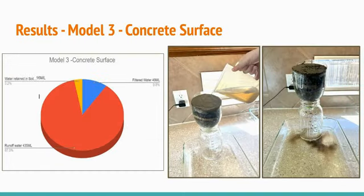This slide shows the results of model 3. You can see the filtering process in the pictures. The chart shows that the amount of filtered water was 9.8%, the runoff water was 87%, and the water retained in soil was 3.2% of the rainwater used in the experiment.